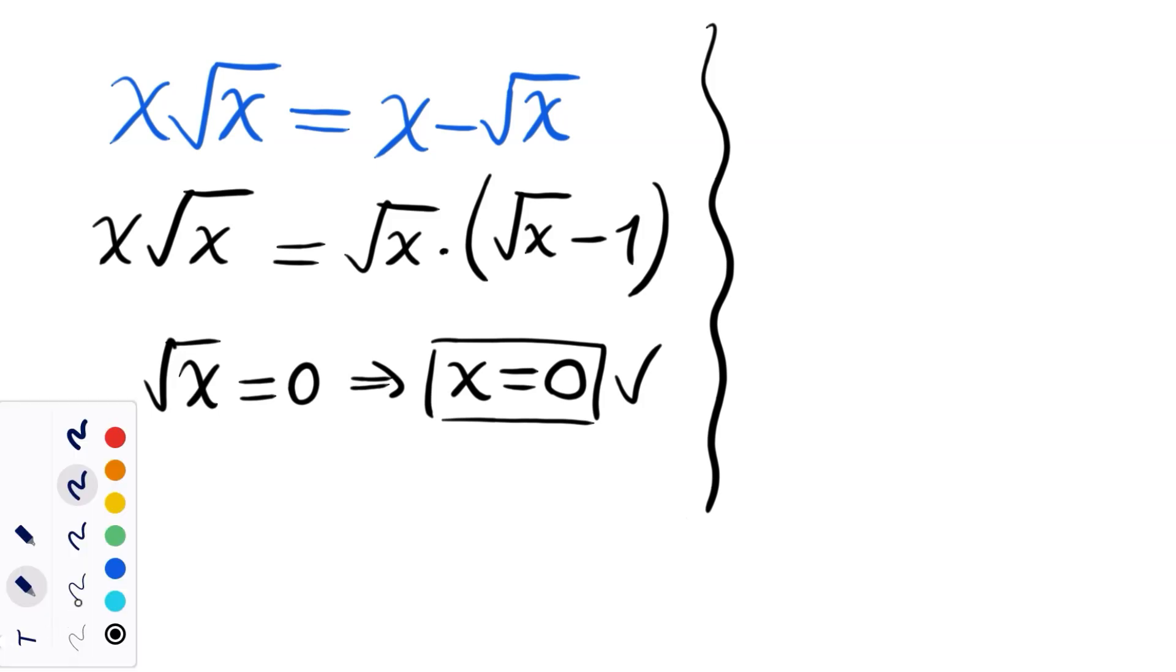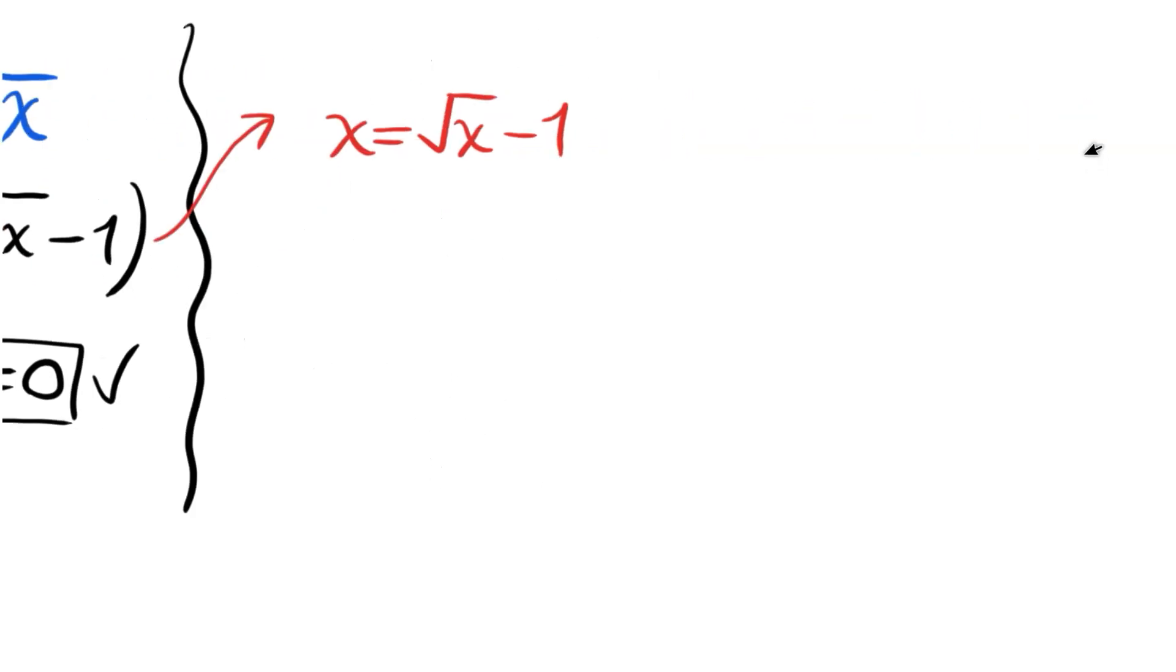Now, canceling that √x, we have x = √x - 1. We will square both sides, but before that let's isolate our radical. We have x + 1 = √x.